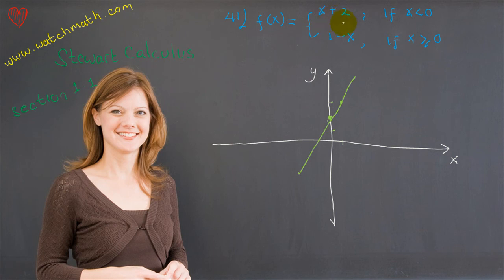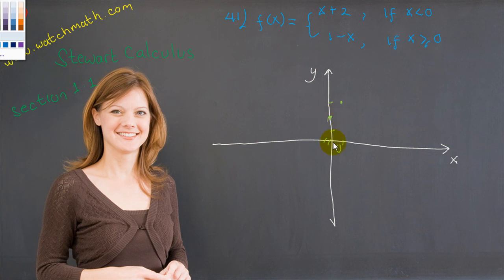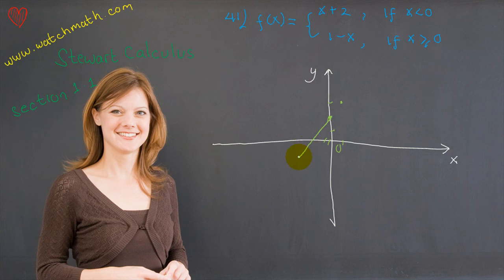Now we need to apply the restriction. The function is equal to x plus 2 only when x is less than 0. So at x equals 0, we take the part of the green line only for x less than 0, which means we erase the part to the right. We redraw, including only from negative infinity up to but not including x equals 0 — starting from x equals 0 all the way down to the left.